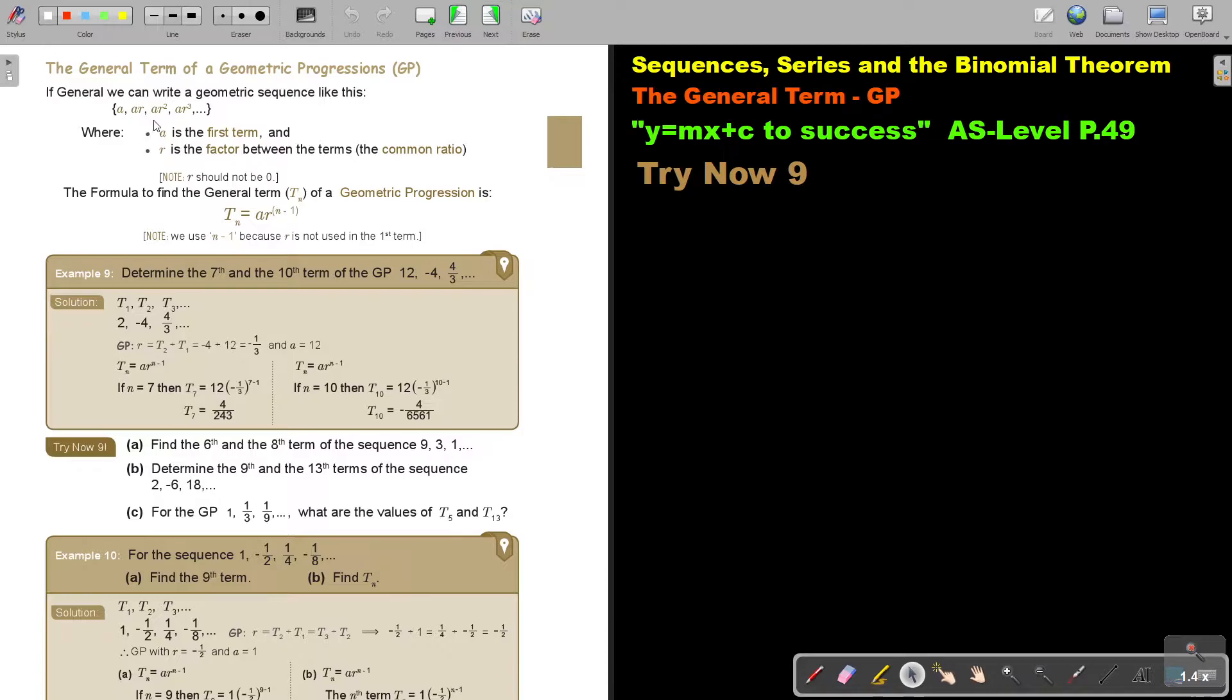A, AR, AR squared, AR to the power of 3, where A is the first term, R is the factor between the terms, the common ratio.